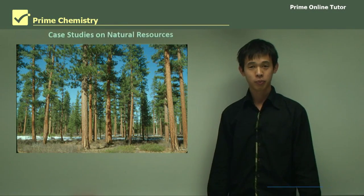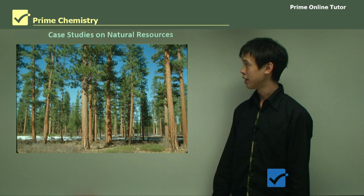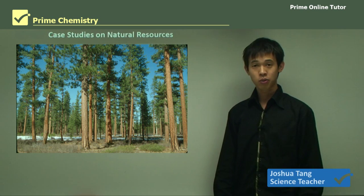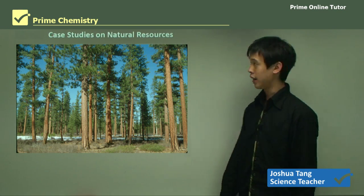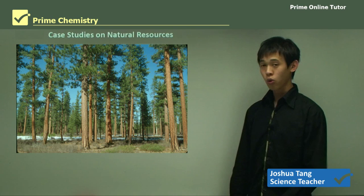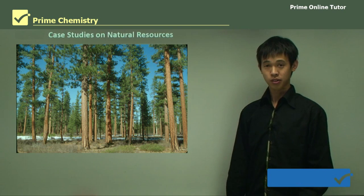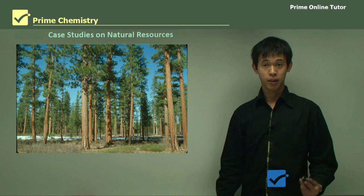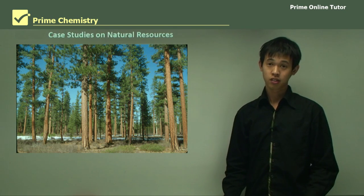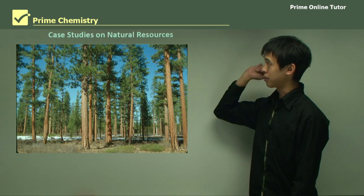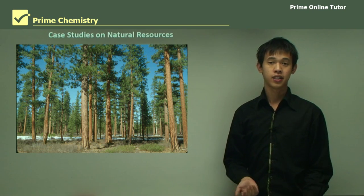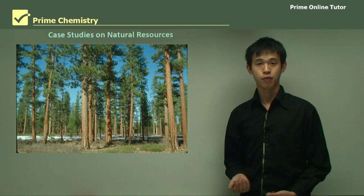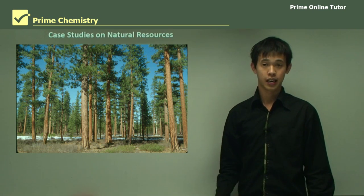Hi everyone, welcome again. Today we'll be studying the industrial chemistry option of the year 12 syllabus. Last lesson we talked about natural resources, and in this lesson we'll be doing case studies on various natural resources that have been replaced with synthetic materials.